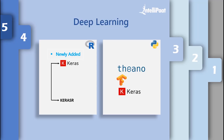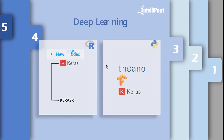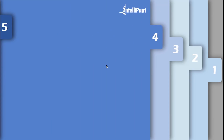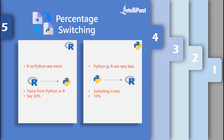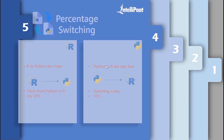Both languages are useful in their own terms. Looking at switching percentages from past years of research: the percentage of people switching from R to Python is higher than from Python to R. For example, if 10% of people are switching from Python to R, then 20% are switching from R to Python — twice as many.